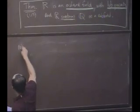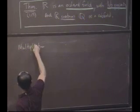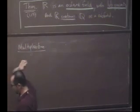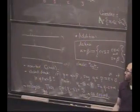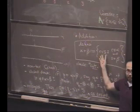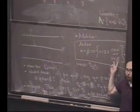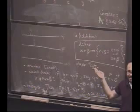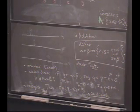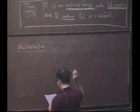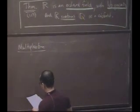So multiplication — I'll just make a few comments, because it's kind of what you might expect. If addition is the sum of two things, one from one cut and one from the other, and you look at all such things, what do you think multiplication ought to be? Maybe the products of lots of things, one from the other? The only problem with that is that if you have some negatives, you run into problems — negative numbers.